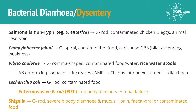Then we've got Vibrio cholerae — that's the one we do treat with antibiotics, because it causes an enterotoxin and lots of fluid loss. The buzzword here is rice water stools: if you see 'rice water stools,' they have cholera. E. coli — classic fecal oral route or contaminated food. And the most common organisms to cause dysentery are EIEC and Shigella.